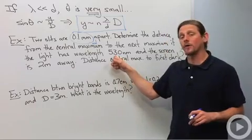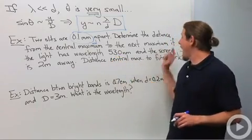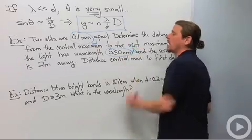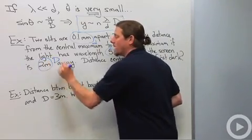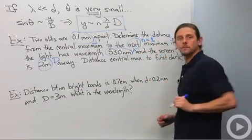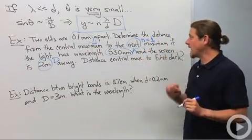If the light has wavelength 530 nanometers and the screen is 2 meters away. So this is my lambda. This is my big distance. And the word next here says n equals 1. So that's the idea.